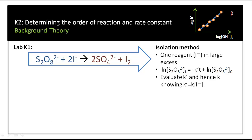In a previous lab we looked at the iodide-persulfate reaction, and to simplify this reaction we used the isolation method where we had one of the reagents in large excess. Since this reagent is in large excess, the reaction simplifies to a pseudo first order reaction, and the integrated rate law gives us: log of the concentration of persulfate at time t equals minus k-prime t plus log of the initial concentration of persulfate. k-prime is the pseudo first order rate constant determined from a plot of log concentration versus time.